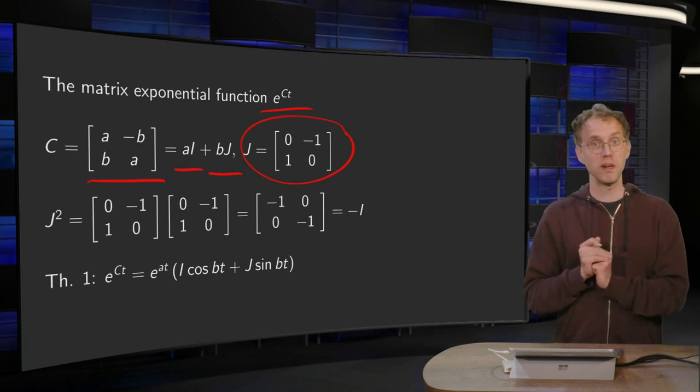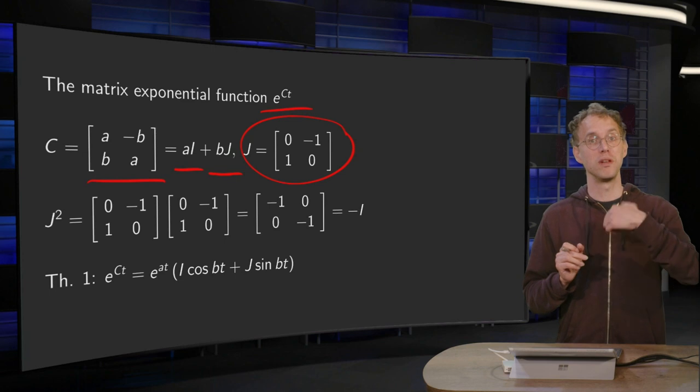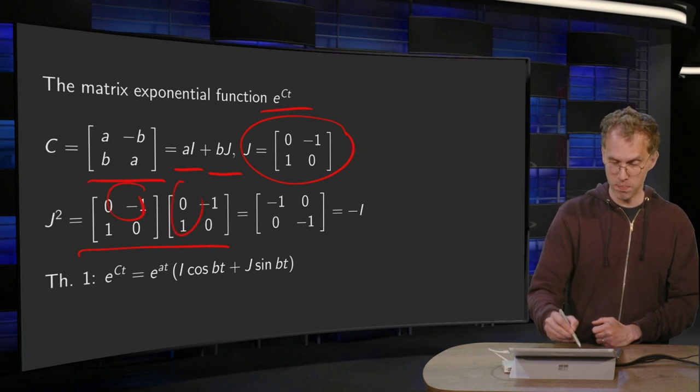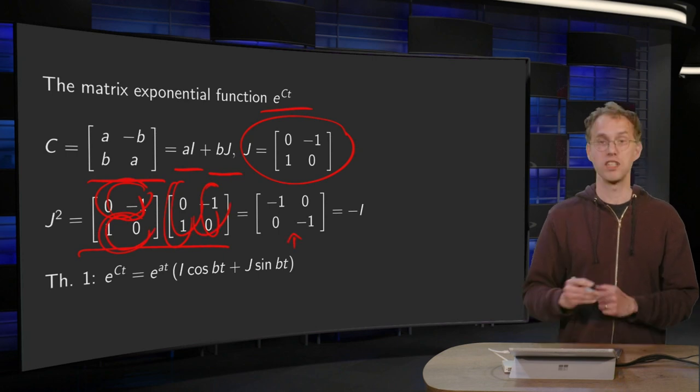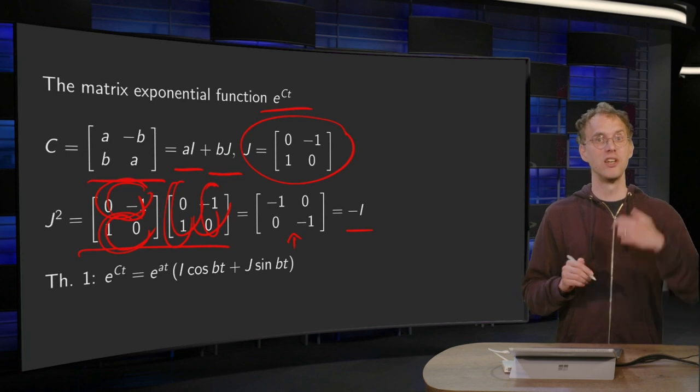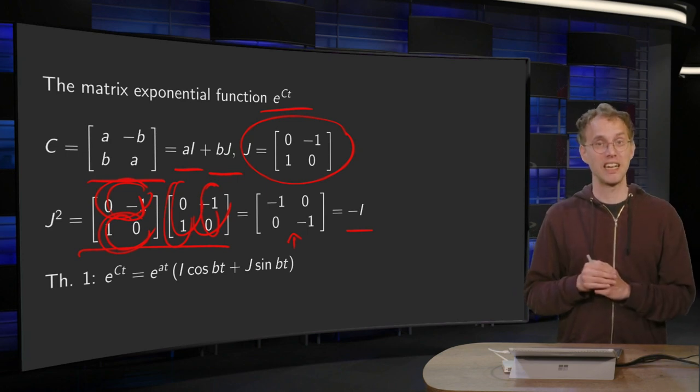There is something special about j. Computing powers of j is easy because j squared, which we compute over here using the row column rule, gives us minus one, zero, zero, minus one. So j squared is minus the identity matrix.